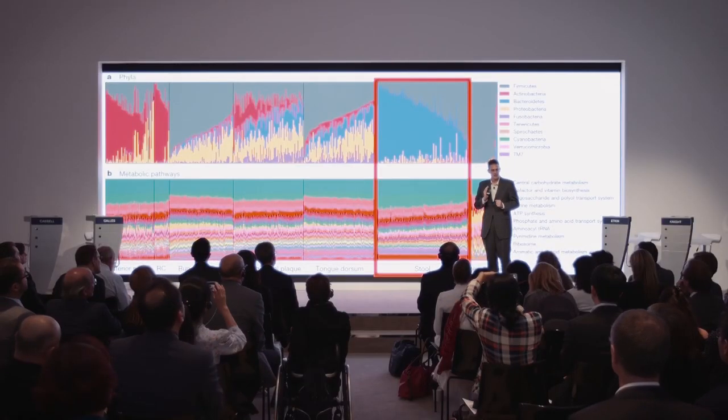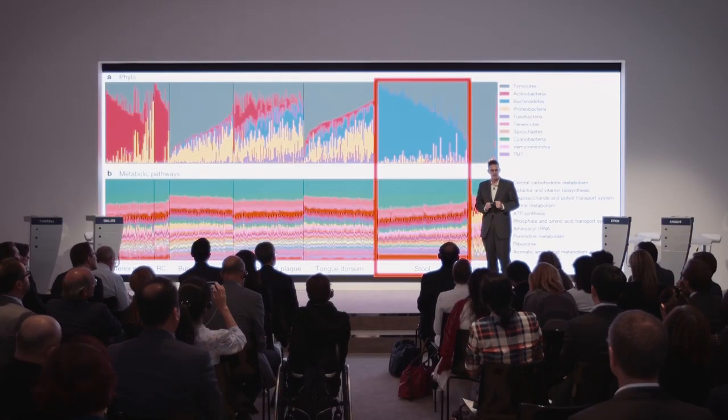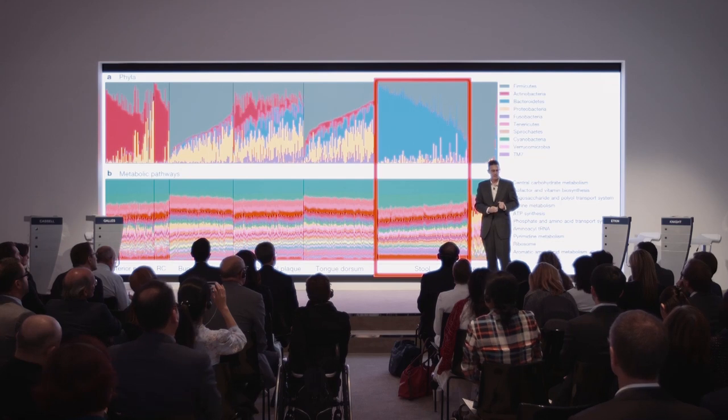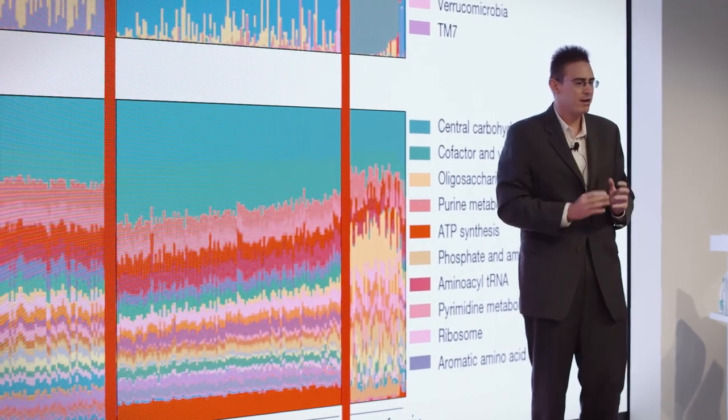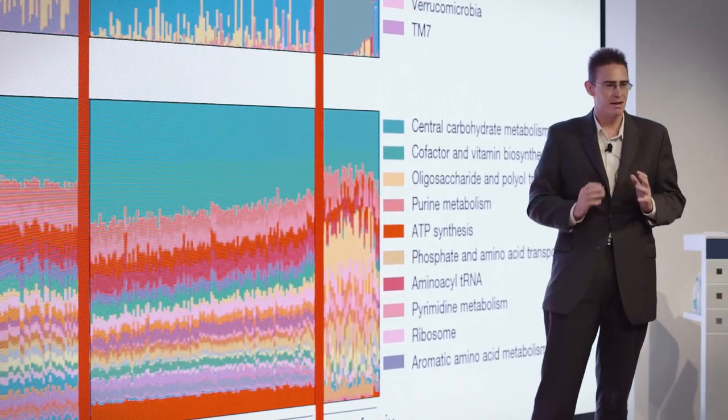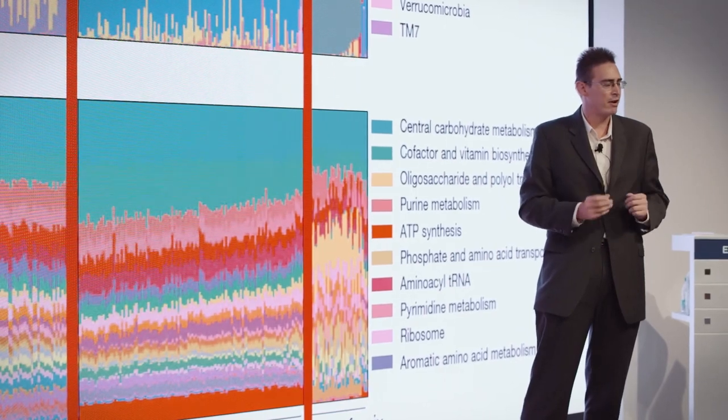Each of us harbors a completely different species assemblage from the person sitting next to us, which is remarkable when you consider that our human genomes are 99.99% the same. But at least when we're healthy, the functions that our microbes perform are all very similar. This was very surprising at first.